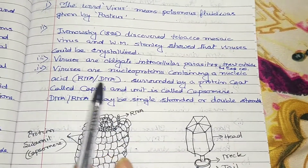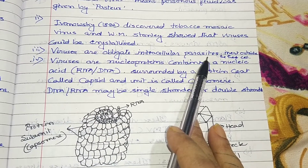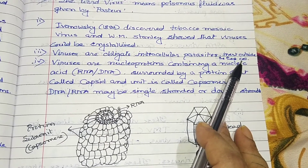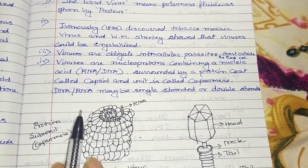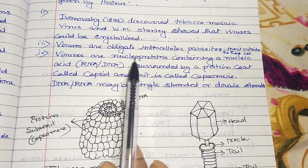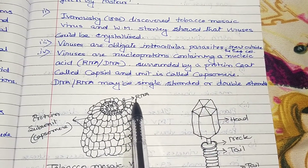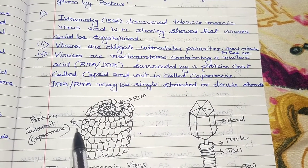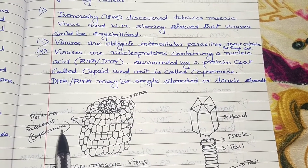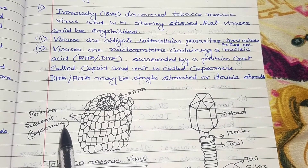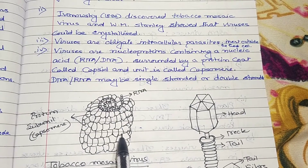Viruses are obligate parasites — outside the host cell they are dead, but inside the host cell they become alive and survive. Viruses are nucleoproteins containing a nucleic acid (RNA or DNA) surrounded by a protein coat. This protein coat is called the capsid, and each individual unit of the capsid is called a capsomere.